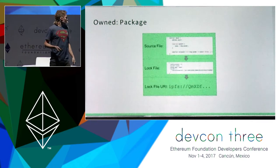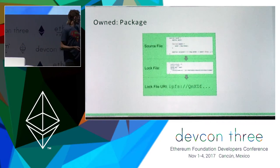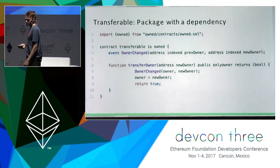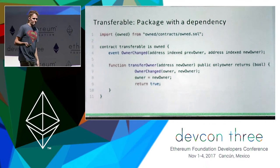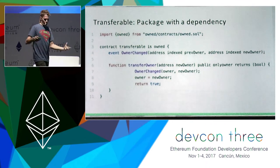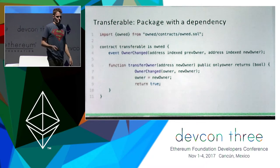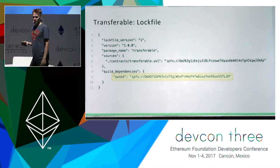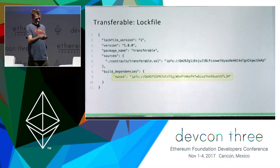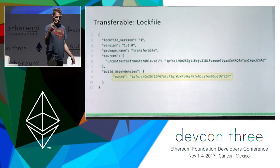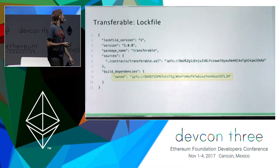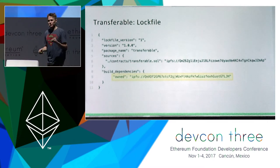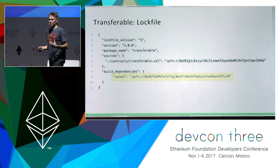So we have a source file, we have this lock file which you can also think of as a package, and then we can reference it using its own content-addressable URI. We can actually extend the owned concept with this transferable contract, which depends on the previous example. This is what the lock file looks like for that package — it references the other lock file using the build dependencies key, which makes the entire dependency tree immutable because everything is using content-addressable URIs.